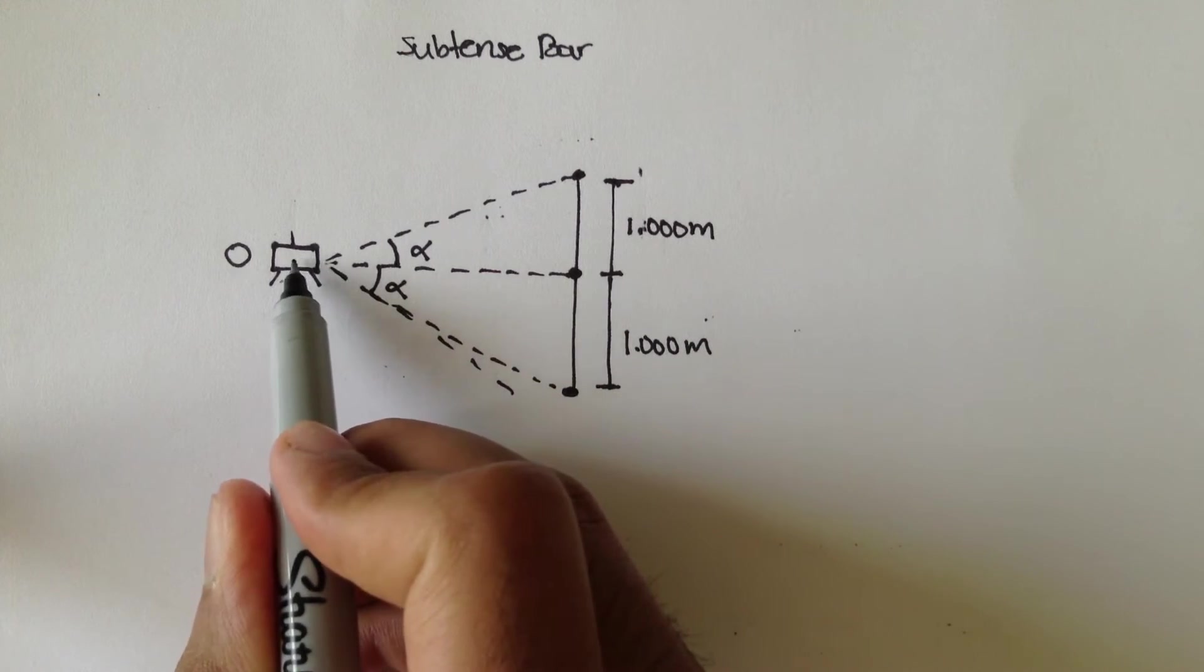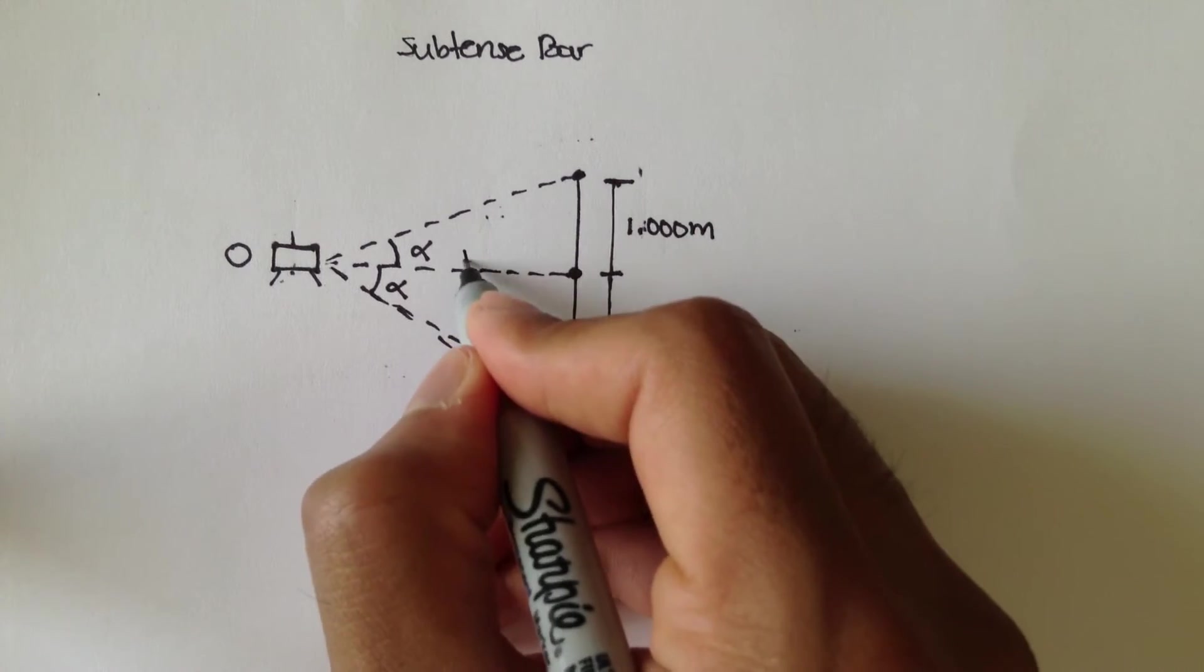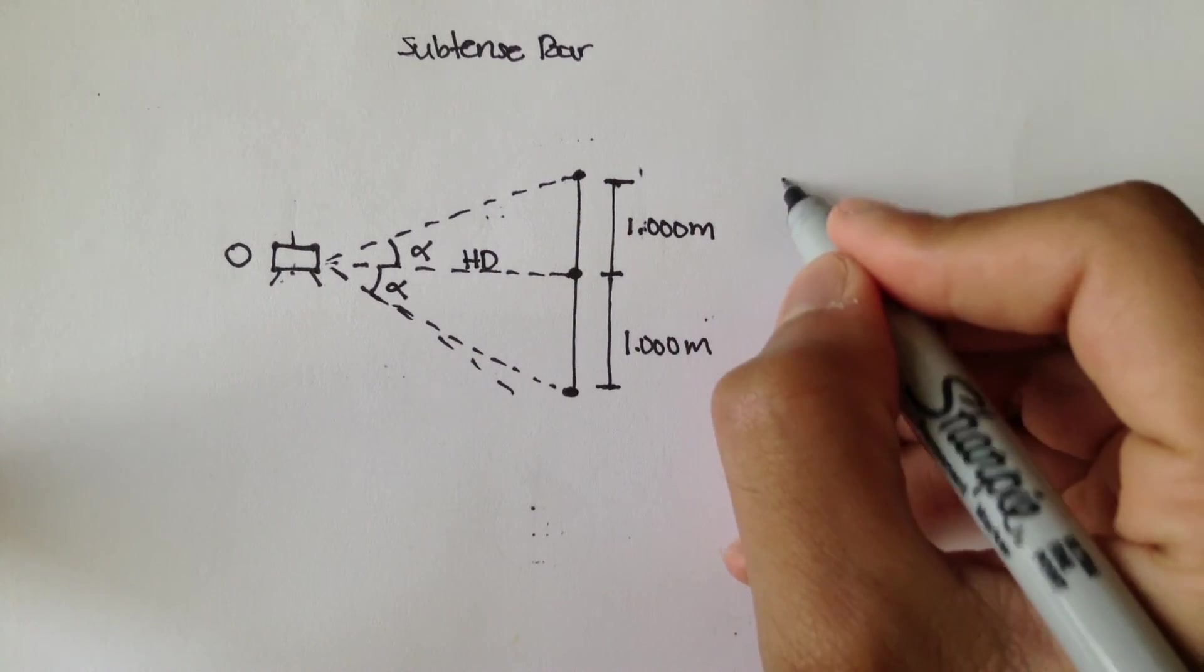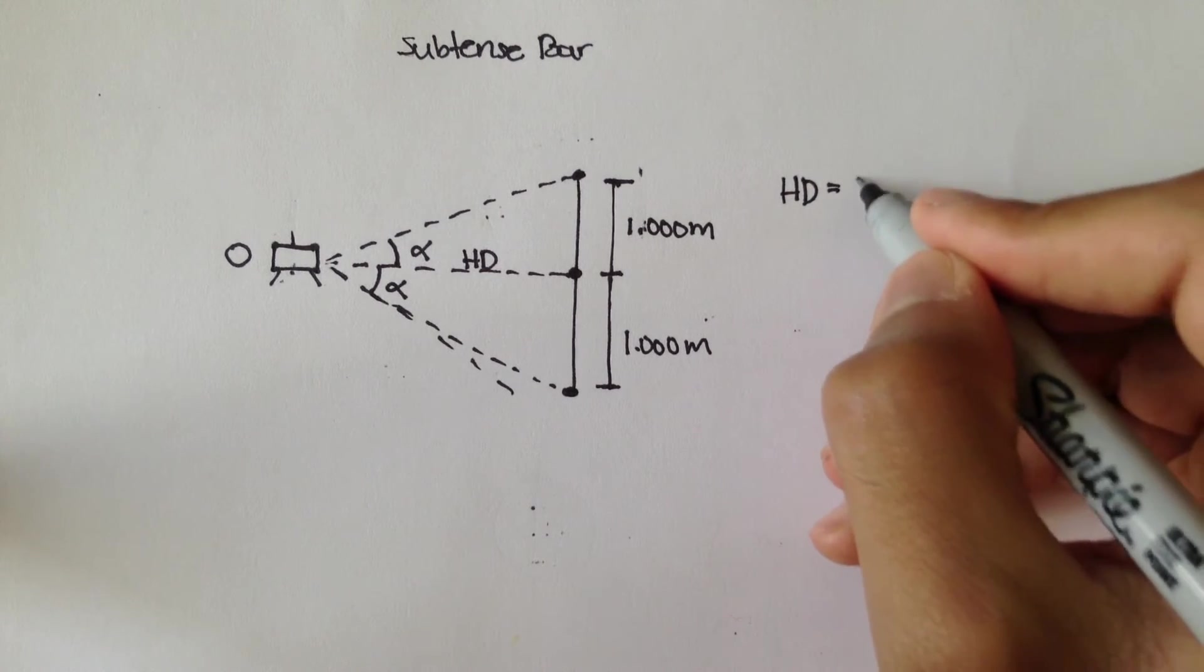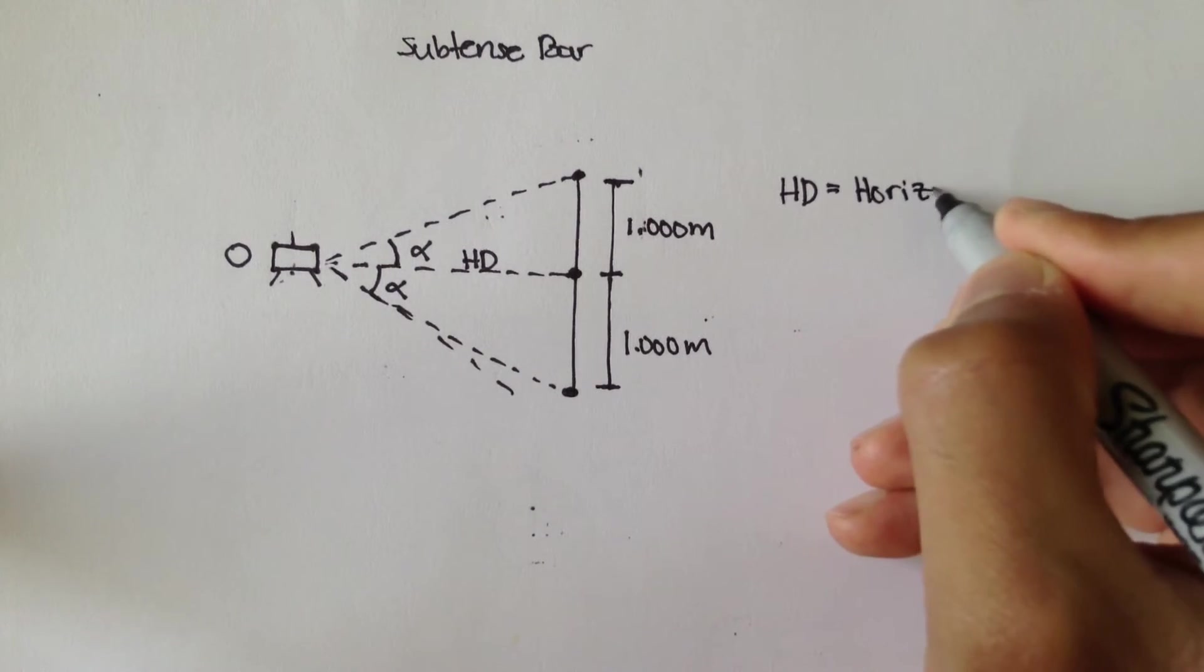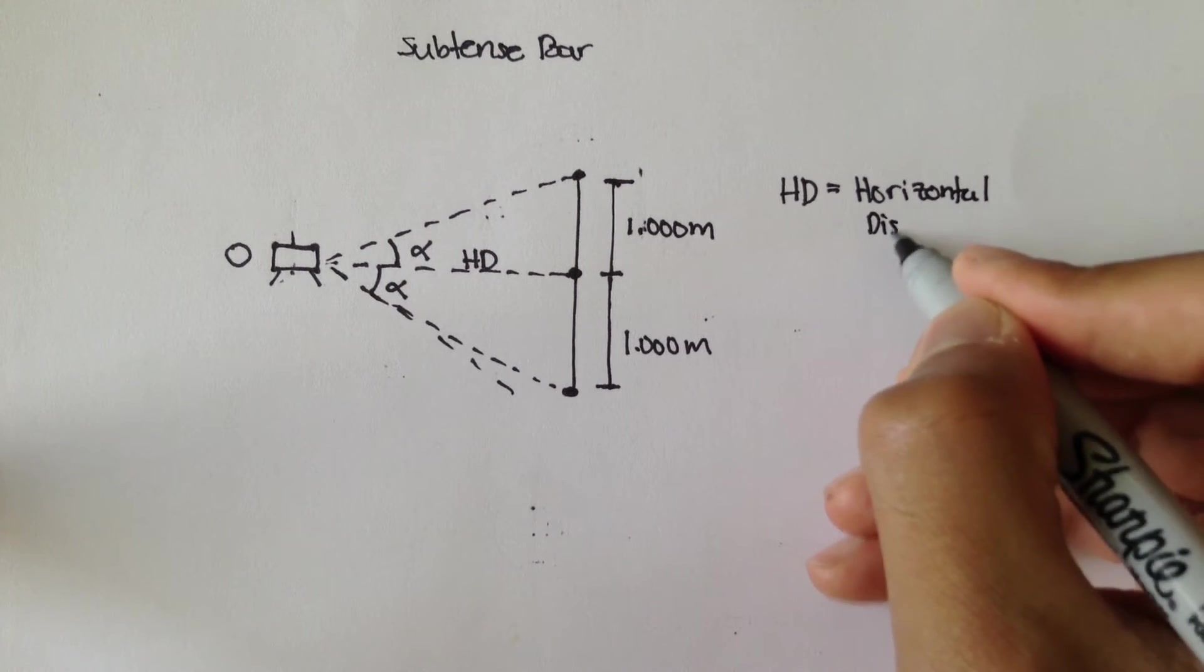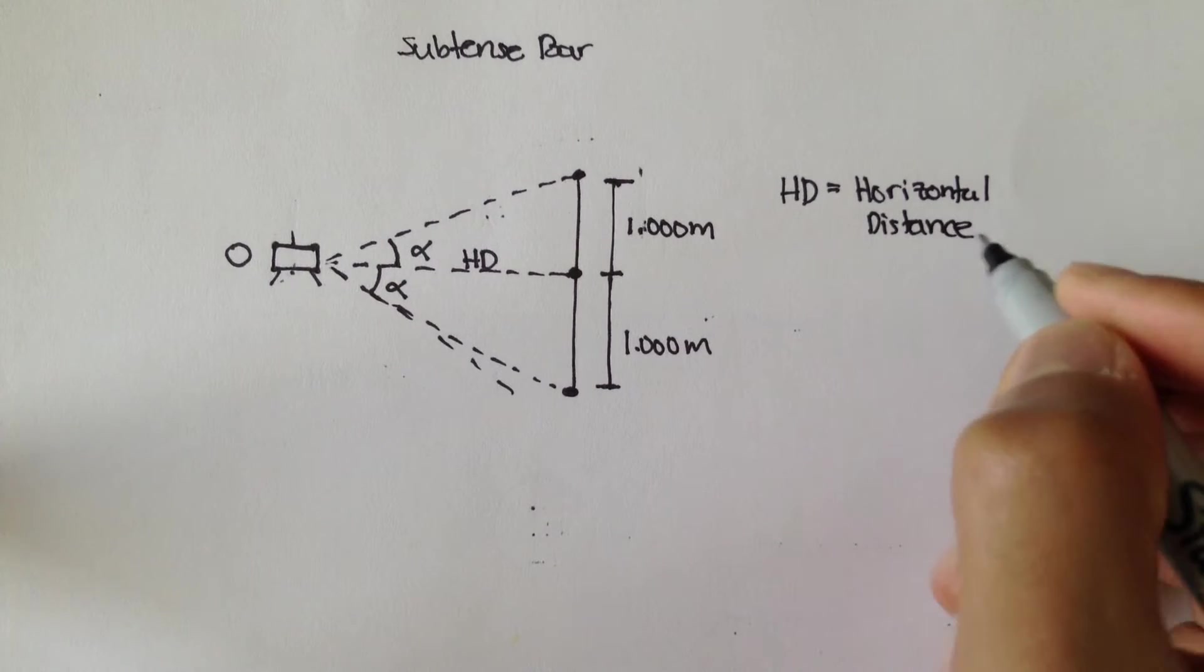And we'll call the sight from the instrument to this point, we'll call that HD. And all HD stands for, it's not high definition, it's horizontal distance.